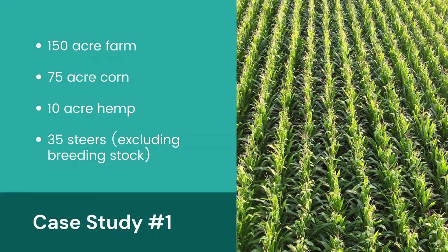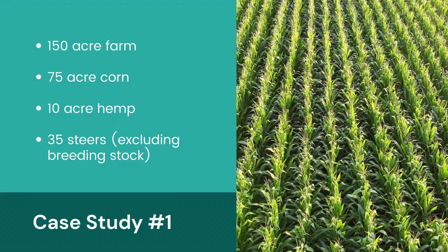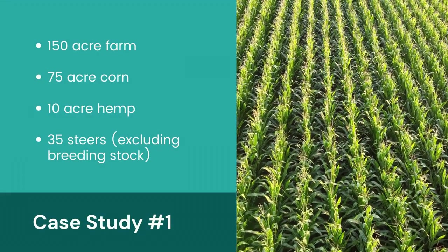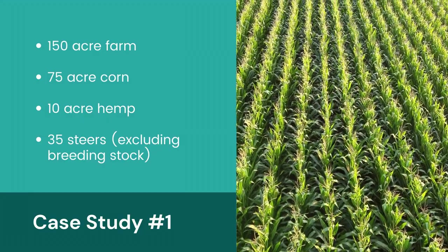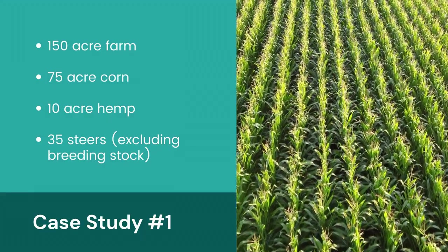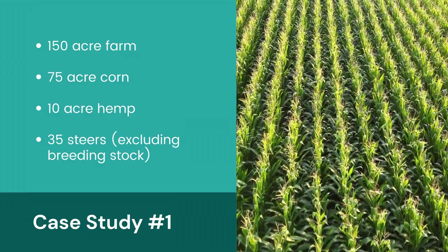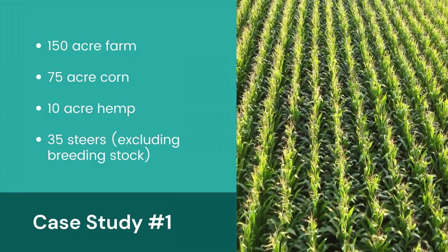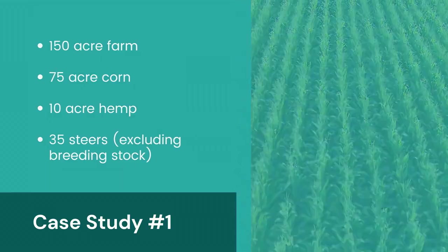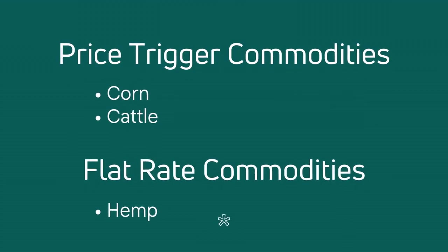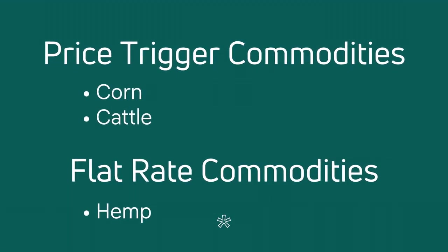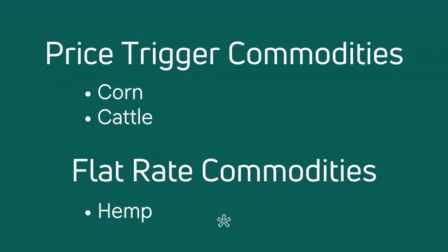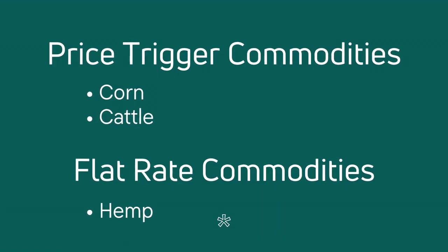In the first case study, we have a producer who operates a 150-acre farm. In 2020, 75 acres were planted with corn and 10 acres with hemp. Excluding their cattle breeding stock, there were also 35 steers at peak inventory. In this scenario, the farmer produces commodities that fall in the price trigger category — corn and livestock — as well as the flat rate category: hemp.